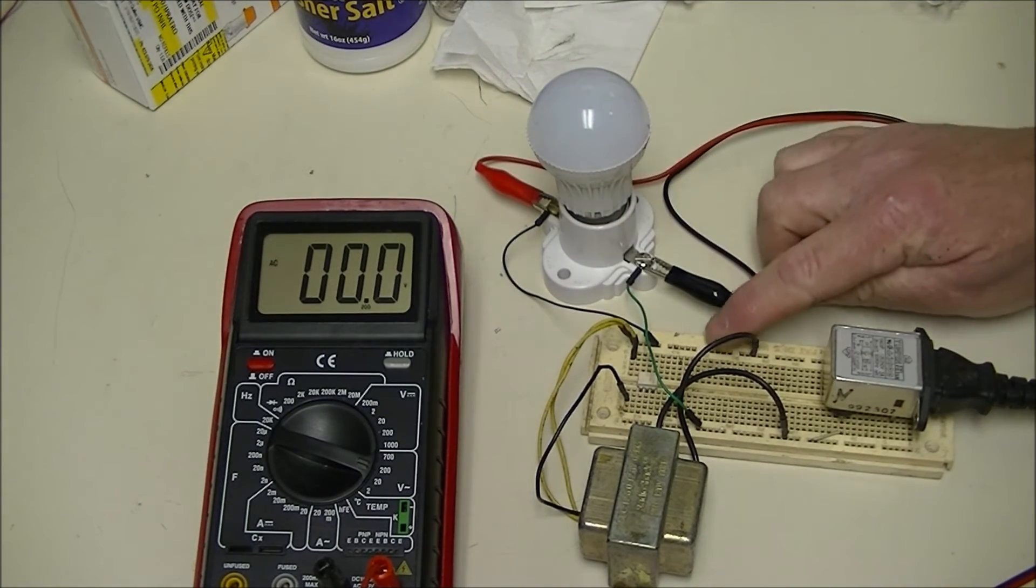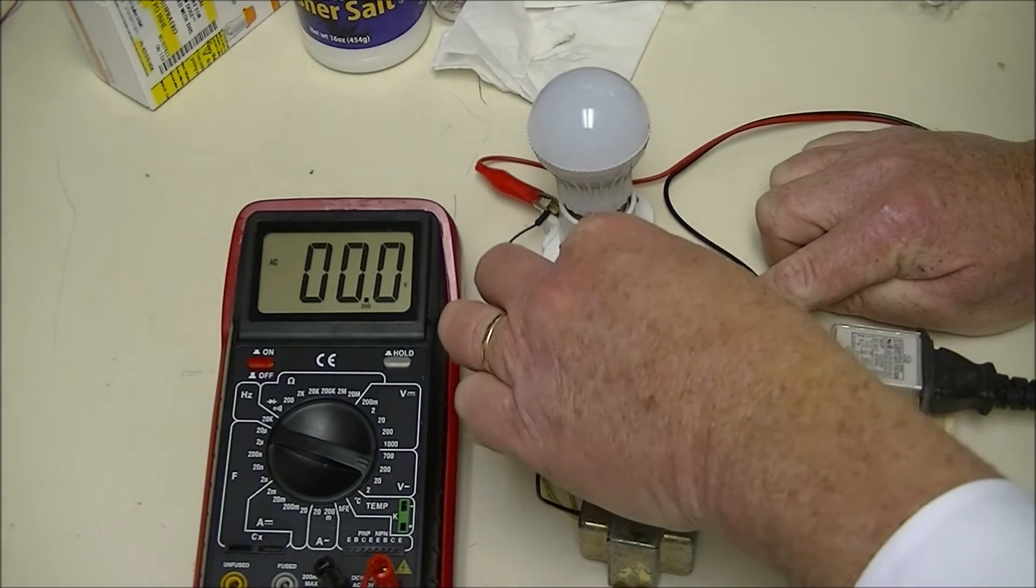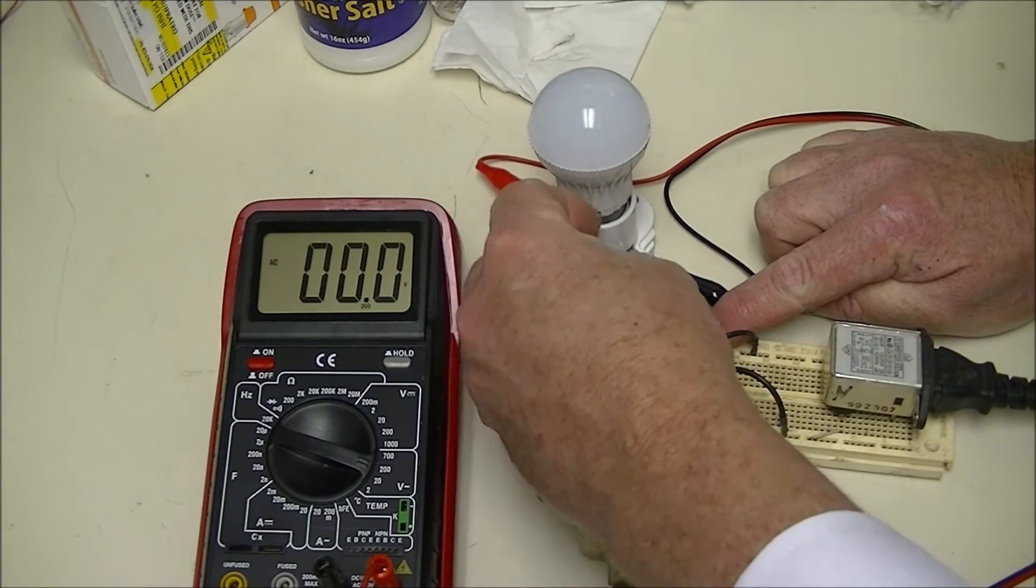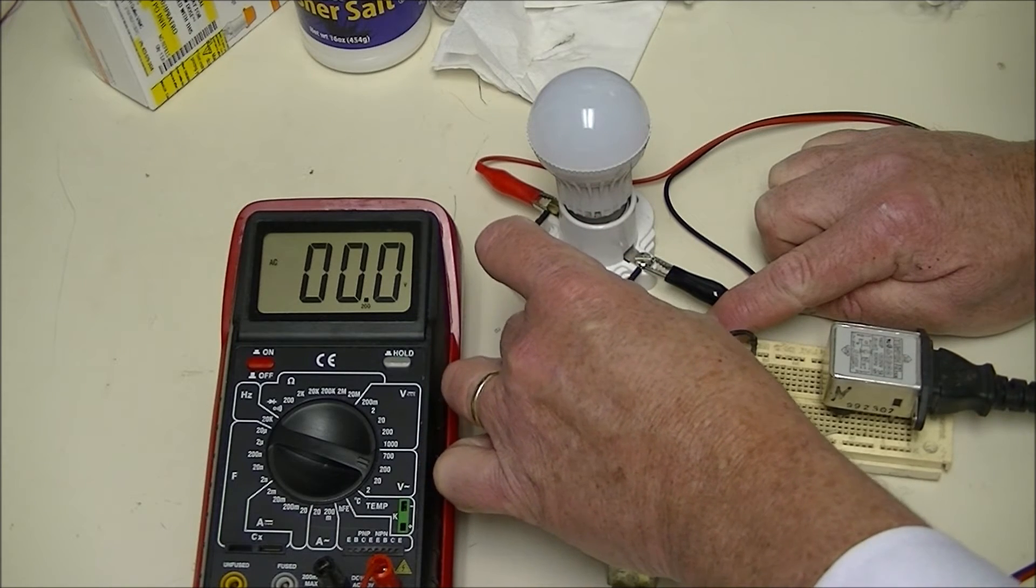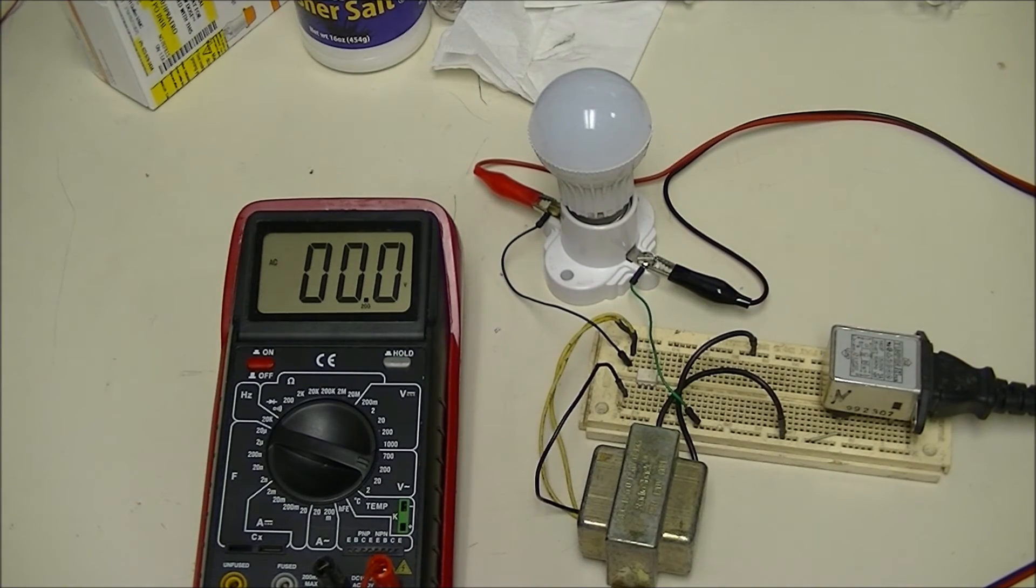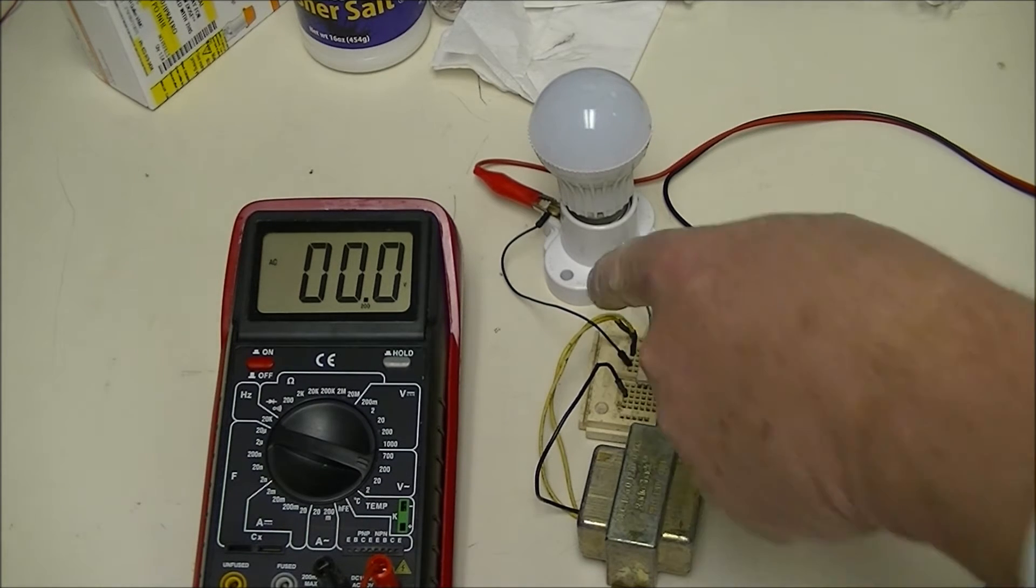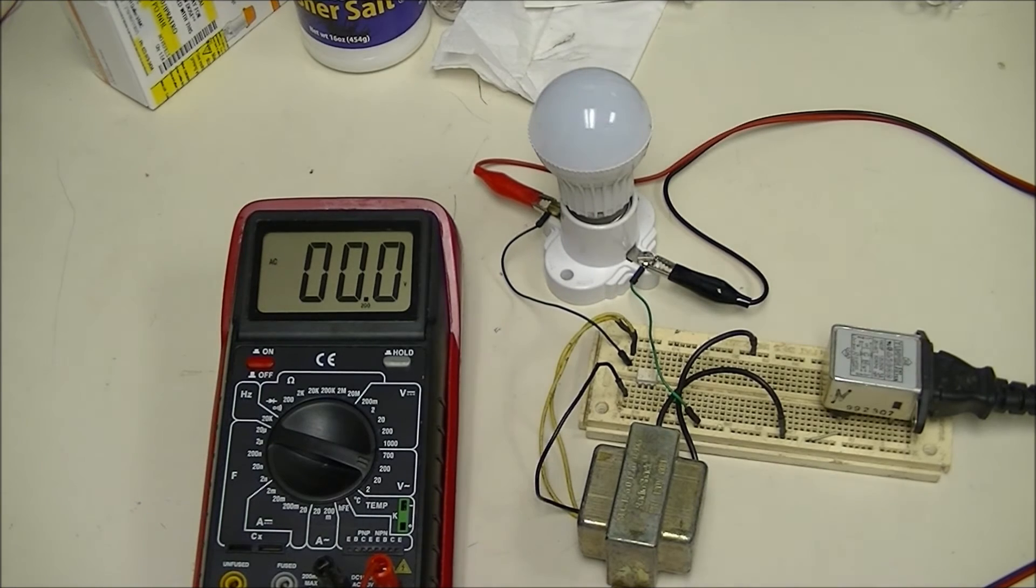Let me disconnect the power. These yellow leads are the secondary. Now I have the secondary winding in series with the 120 volt winding on the primary.